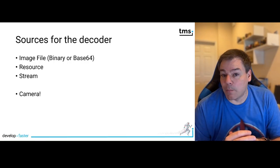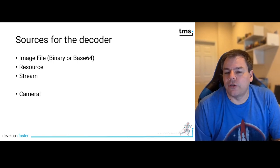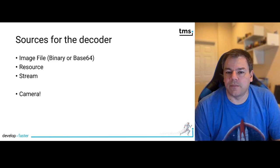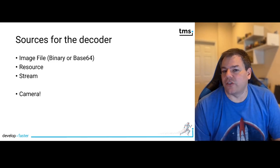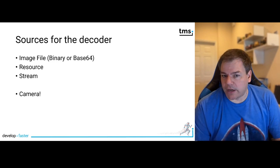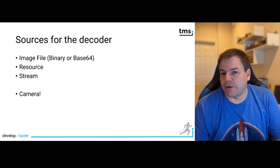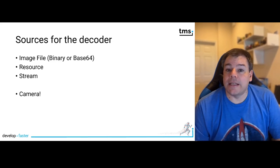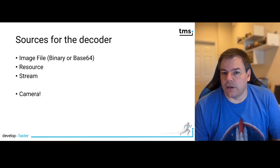Before looking at a concrete example where we read and decode barcodes, let's look at the options you have to deliver barcodes into your application. First, you can use an image file — you load the image from a hard disk, or you read it from a stream. The files can be in binary or Base64 format, which makes it very easy to use these controls in web applications, since a lot of content on the web is encoded in Base64, so no conversion on your part is needed.